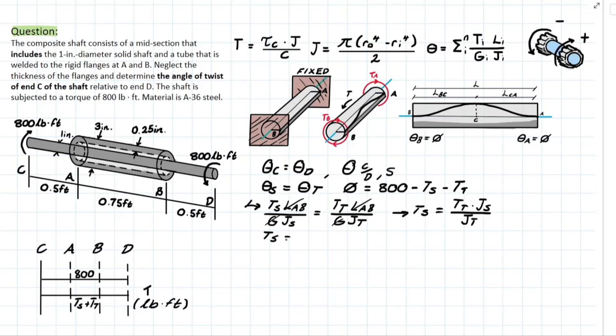So TS is going to equal to TT and the polar moment of inertia formula. So on the top we have for the shaft, the diameter of the shaft is going to be one inch. Our formula uses radius so we're going to have to divide that by two. So we're taking 0.5 to the power of 4. And that's it for the top.